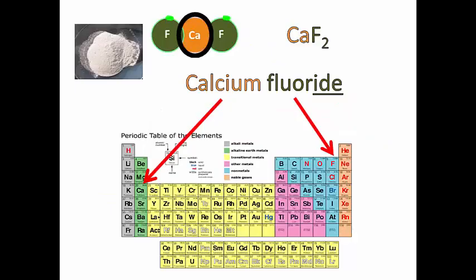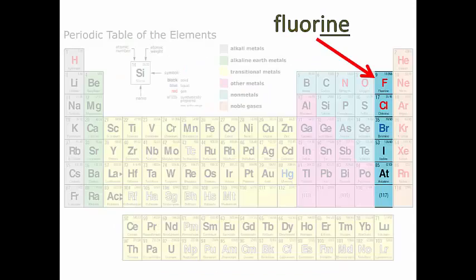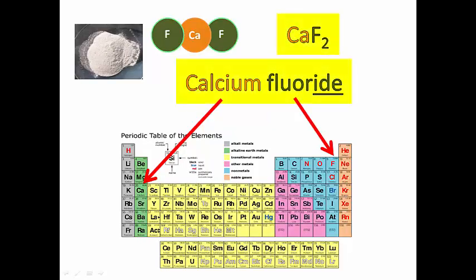So that's why we write calcium first, then fluorine, but we change the fluorine ending -ine into -ide. Fluoride. Calcium fluoride. CaF2.